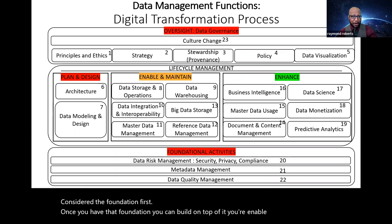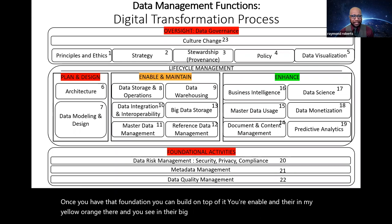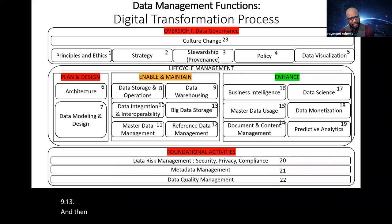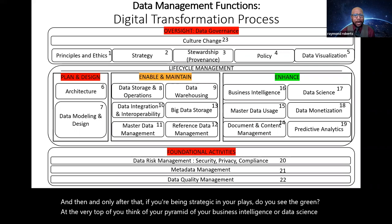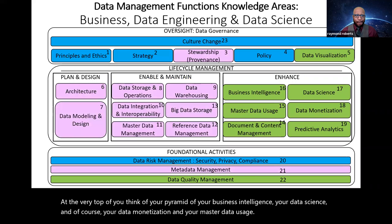Coming back to that slide we just looked at, I'm now overlaying that red, yellow, green across this. What you see, what I'm quickly communicating here is that data governance, planning and design, and foundational activities in red, that should all be considered the foundation first. Once you have that foundation, you can build on top of it, you're enable and maintain there in my yellow, orange there. And you see in there, big data storage, data warehousing. And then, and only after that, if you're being strategic in your plans, do you see the green. At the very top, you think of your pyramid of your business intelligence, your data science, and of course, your data monetization and your master data usage.